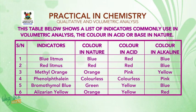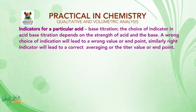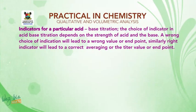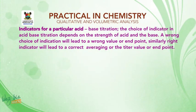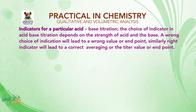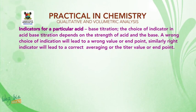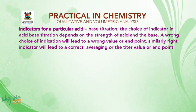Having gone through that, we are going to look at the indicators for a particular acid-base titration. The choice of indicators in acid-base titration depends on the strength of the acid and the base — whether they are strong or weak. A wrong choice of indicator will lead to wrong values or end points; similarly, the right choice of indicator will lead to correct titration values or end points.